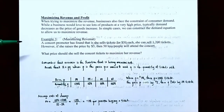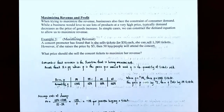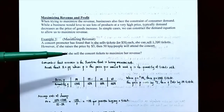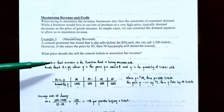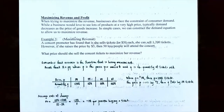Example three: maximizing revenue. A concert promoter has found that if she sells tickets for $50 each, then she can sell 1,200 tickets. However, if she raises the price by $5 per ticket, then 50 fewer people will attend the concert. What price should she sell the concert tickets to maximize her revenue? Let's start this optimization problem by finding the function we're trying to maximize. We're trying to find how many concert tickets should be sold so that the person is maximizing the revenue. So our revenue function is what's being maximized — that's the objective function.